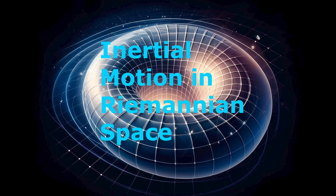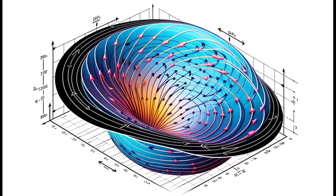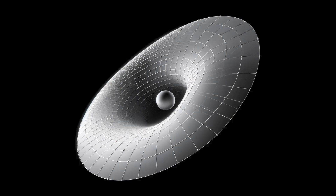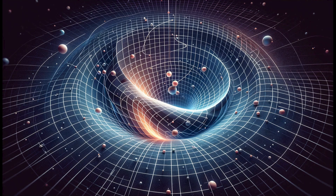In Riemannian space, a material point on which no force acts is either stationary or moves along a geodesic curve. This is the expression of the principle of inertia — known as the geodesic principle or the law of geodesic motion — on a Riemannian manifold. According to the equivalence principle, gravitational fields and inertial fields are locally indistinguishable. A real gravitational field can be described using a curved space corresponding to a Riemannian metric, which can be transformed into the Minkowski special relativity metric locally around any given point. All dynamical elements in the Riemannian spacetime frame are reduced to kinematic elements, with dynamical aspects locally revealed when projected onto the tangent Minkowski space at the spacetime point where they occur.